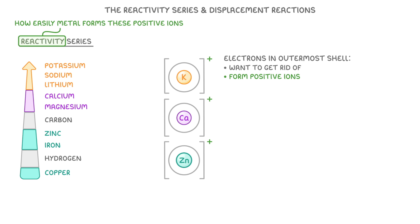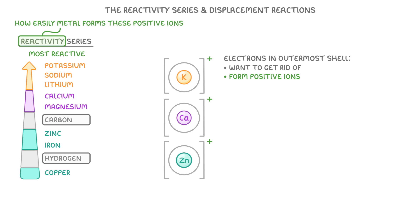The metals that form ions most easily are the most reactive. And by comparing all of the metals, we can arrange them in order of their reactivity, which we call the reactivity series. Now even though carbon and hydrogen aren't metals, we often still include them in the reactivity series as references to compare the metals against.